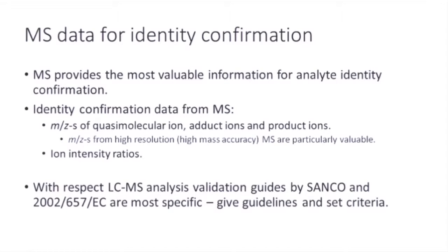First of all, mass spectrometry gives us mass-to-charge ratio for quasi-molecular ions, adduct ions, and product ions. This information is particularly useful if obtained from a high-resolution and high-accuracy mass spectrometer. In addition to mass-to-charge ratio, we obtain also the ion intensity ratios. With respect to LC-MS analysis, validation guides issued by SANCO and the European Commission Decision 2002/657 are most specific. They give guidelines and set criteria for using mass spectrometric data for analyte identification.